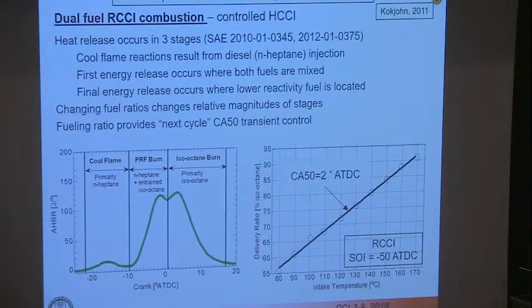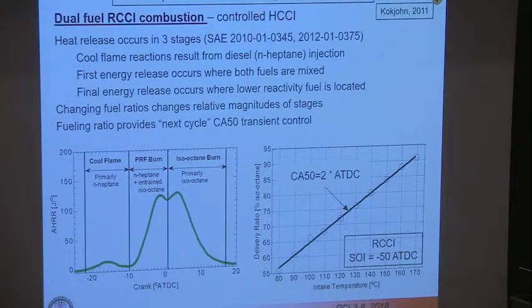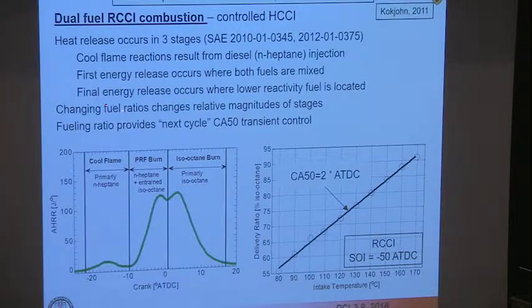The heat release works in three stages: the initial burning of the more reactive fuel — N-heptane — followed by the mixture of N-heptane and isooctane, and then finally the less reactive fuel ignites and burns. Changing the ratio of these fuels changes the shape of the heat release curve. You can bias toward the first peak by having more N-heptane, or vice versa.